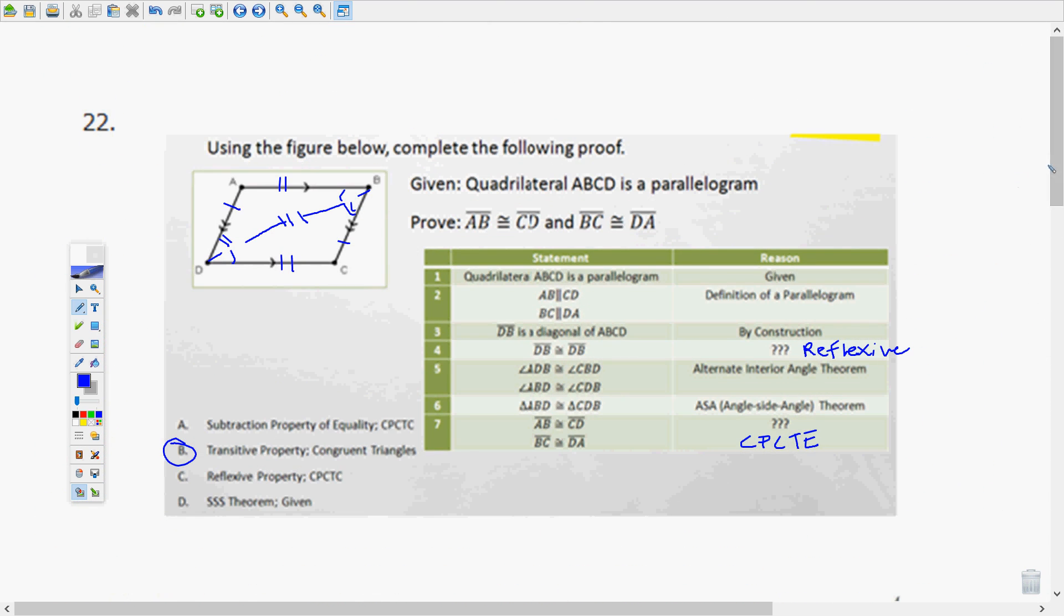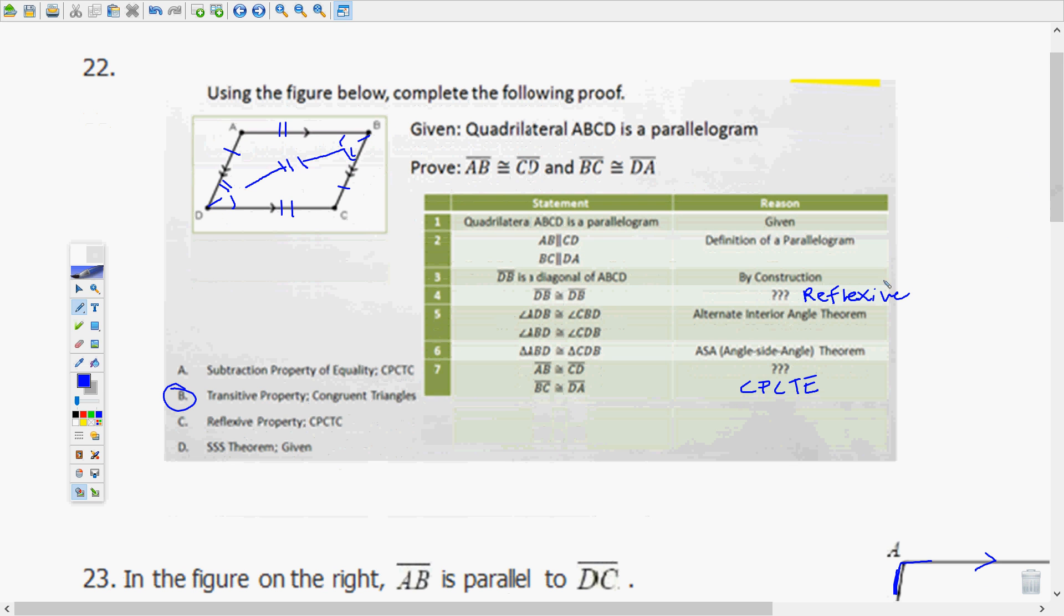Alright, 22. Again these would probably be drag and drop. Use the figure below, complete the following proof. Quadrilateral ABCD is a parallelogram. So if you see, usually they give you the given statements at the beginning, and when it's a quadrilateral, so I marked that the opposite sides are parallel. DB is a diagonal of ABCD, so I just drew that in, kind of crooked but that's OK. And number four asks why would DB be congruent to itself? Anytime something is congruent to itself it's the reflexive property.